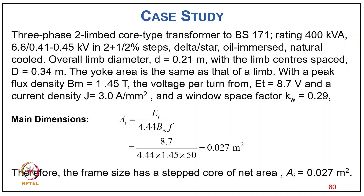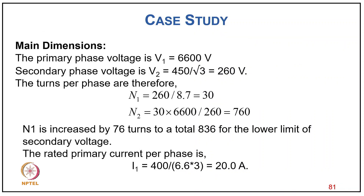Core area: Ai = ET/(4.44 × Bm × f) = 0.027 m². For winding calculations: primary voltage V1 = 6.6 kV; secondary voltage = 450/√3 = 260 V; primary turns n1 = 260/8.7 ≈ 30; secondary turns n2 = 30 × 6600/260 ≈ 760. Total turns 836 for lower limit of secondary voltage. Rated primary current I1 = 400/(√3 × 6.6) ≈ 20 A. Window area Aw = 0.07 m² from the standard formula, and window depth L = Aw/(D − d) = 0.55 m.